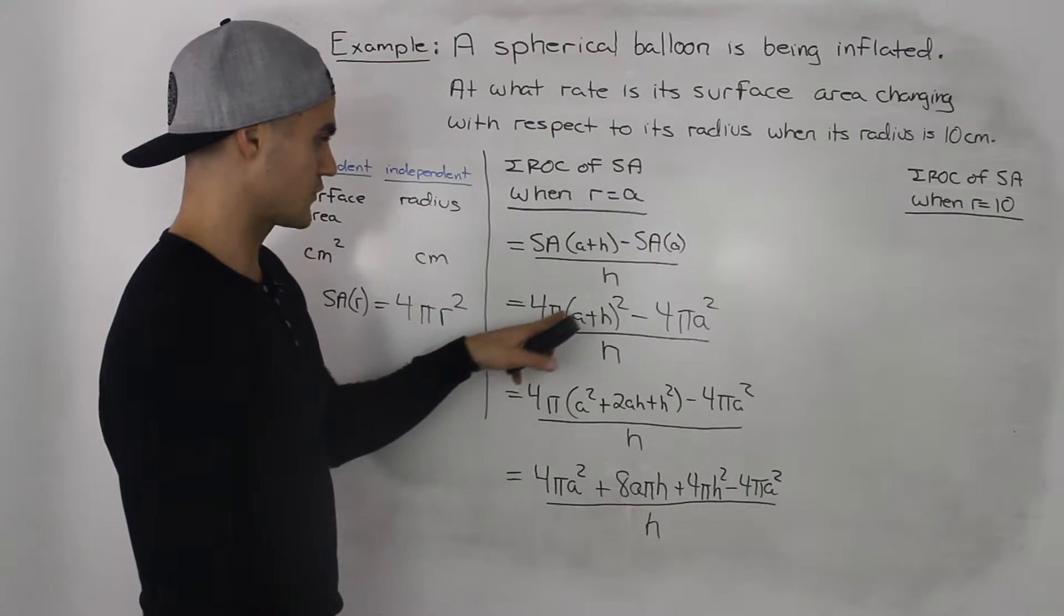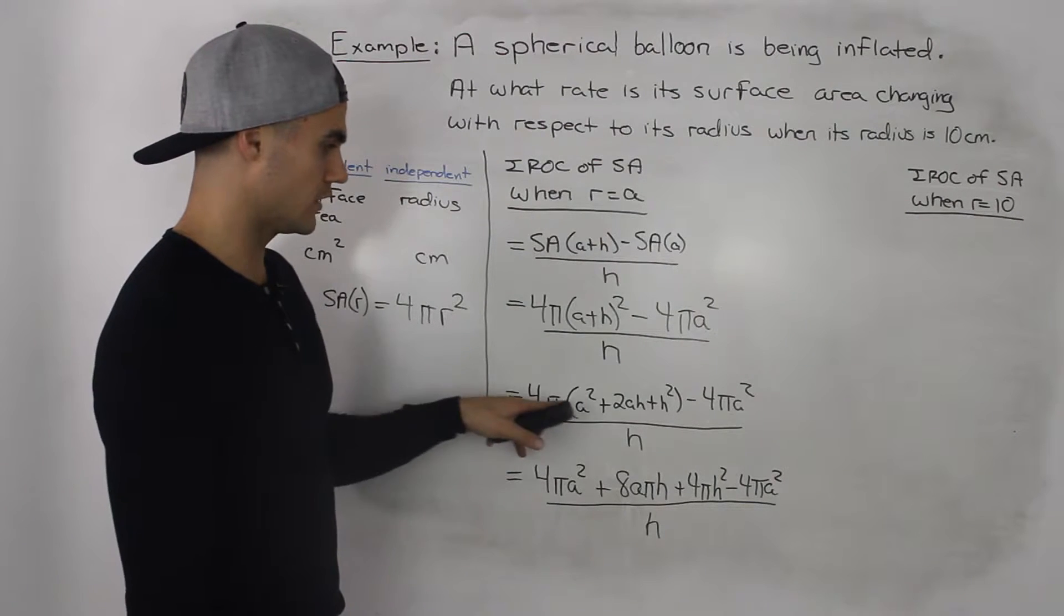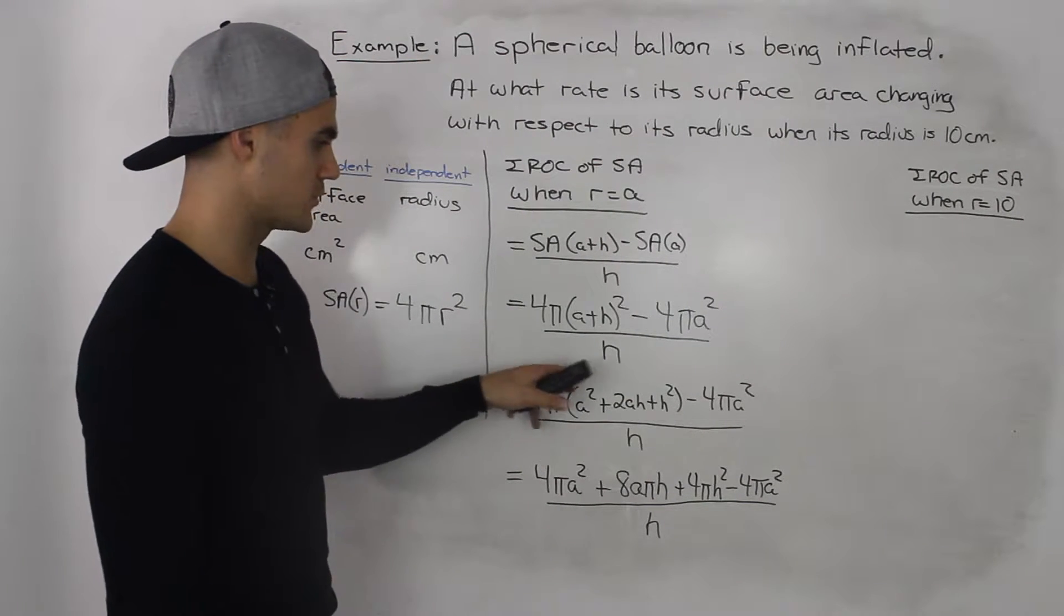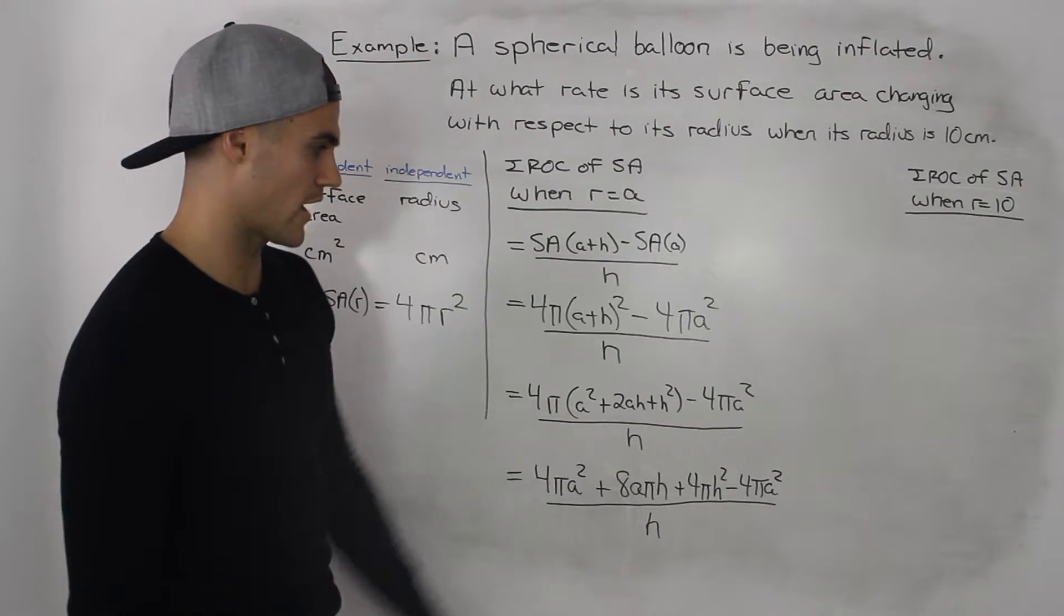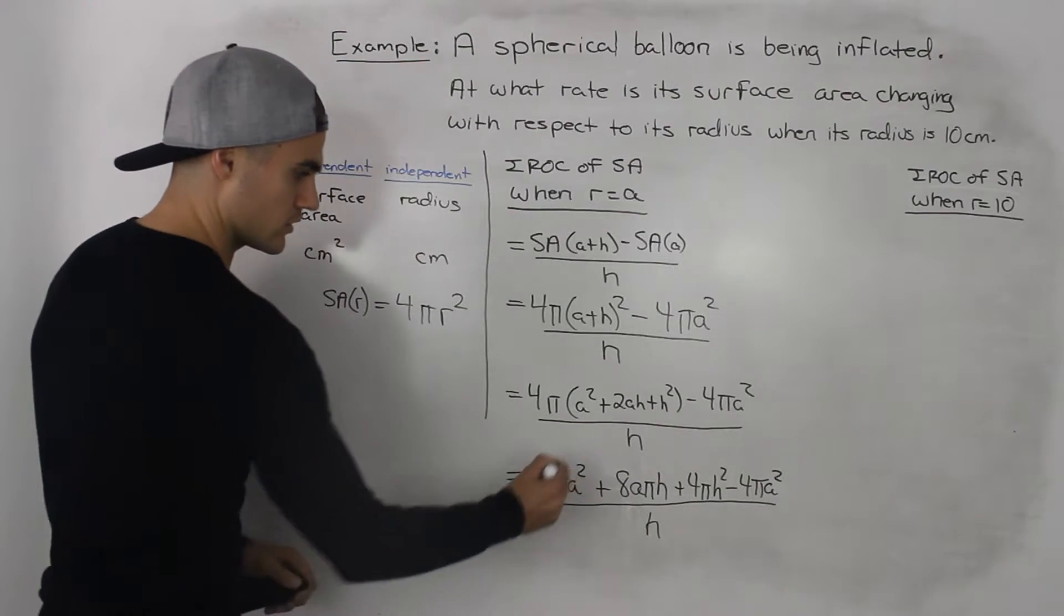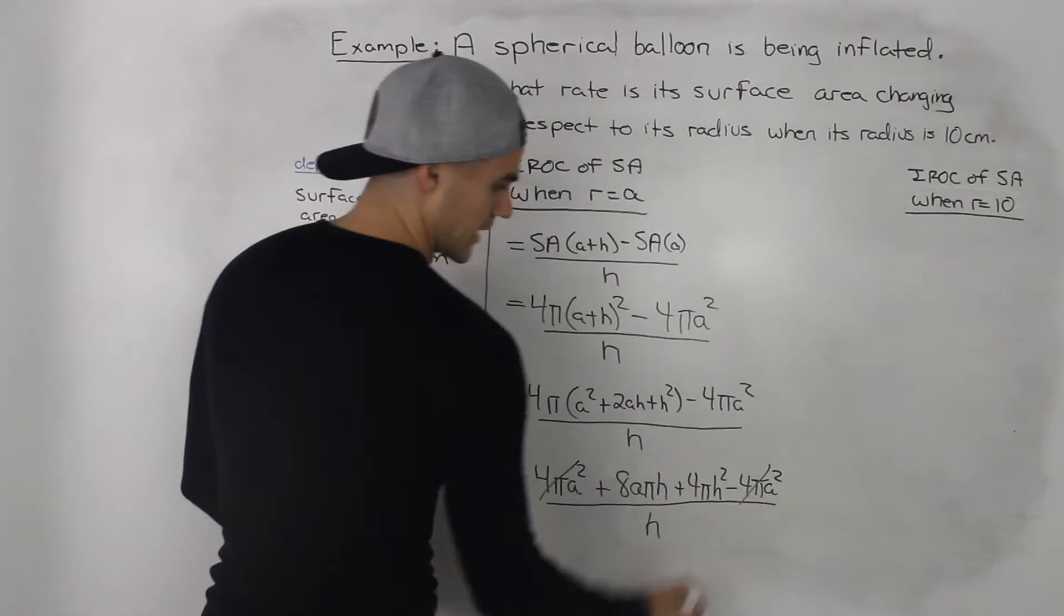So simplifying this further, the (a + h)² we would foil it. We would end up with this bracket. Then we distribute the 4π inside the bracket. And then at this point the 4πa² would cancel out.